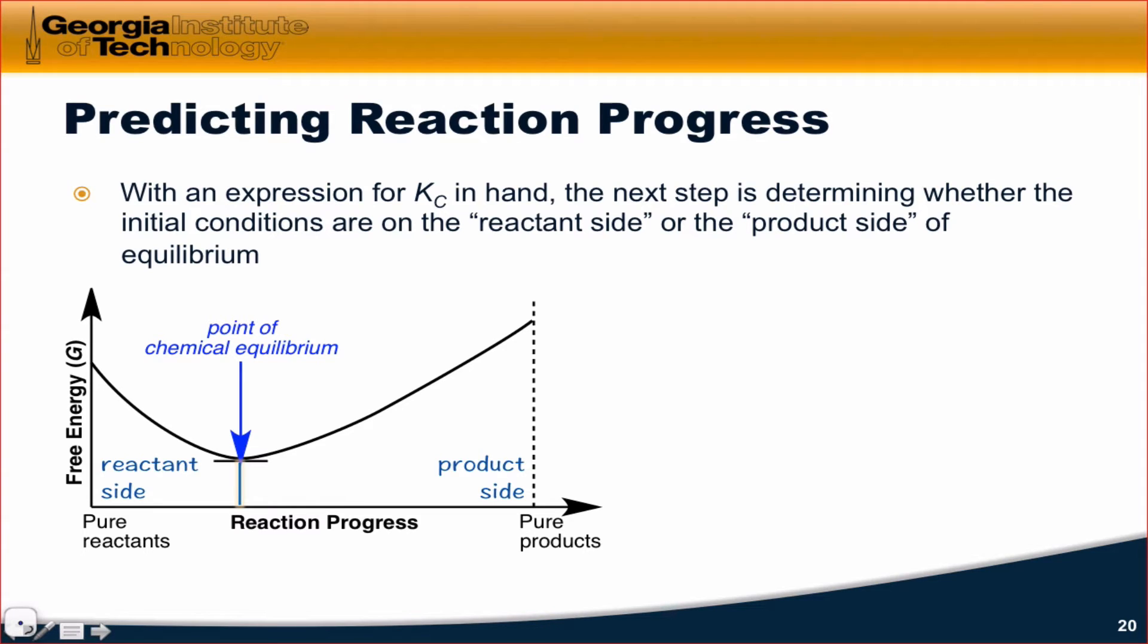Are we in a situation where we don't have enough products, somewhere on the reactant side such that the reaction will move forward? Or are we in a situation where the initial conditions have too many product molecules such that the reaction will spontaneously move backwards toward an equilibrium state?